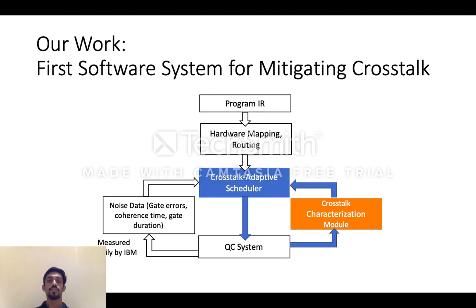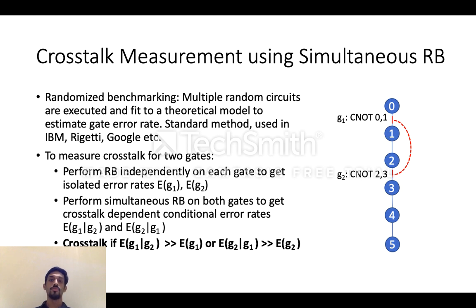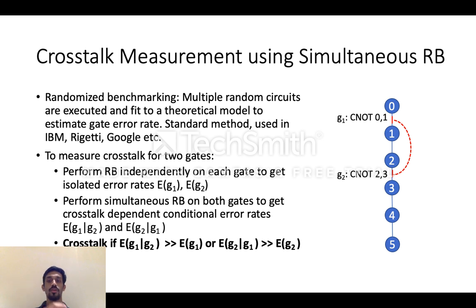Now I'll describe our crosstalk characterization methods. To characterize crosstalk, we first need a method to measure the gate error rates. There is a standard way to do this called randomized benchmarking, or RB. The idea behind RB is that if I want to measure the error rate of a two-qubit gate, I can create multiple random circuits where this gate is invoked along with other random single-qubit gates, execute them on the real device, measure the data, fit it to a theoretical model, and estimate the gate error rate. RB is used in IBM, Google, and Rigetti systems. To measure crosstalk, we first use standard RB to measure the independent error rates of each gate — EG1 is the error rate of a gate when there is no other operation executed in parallel.